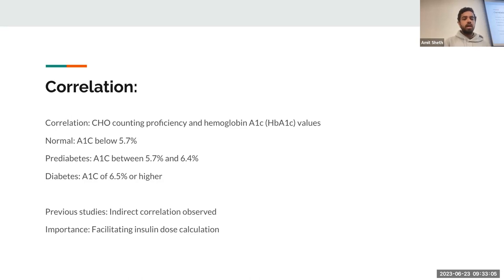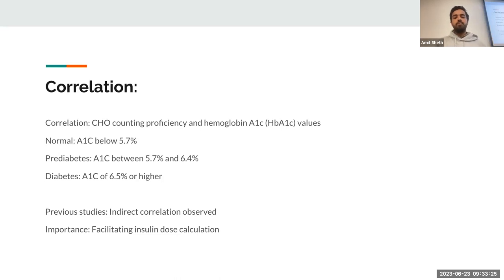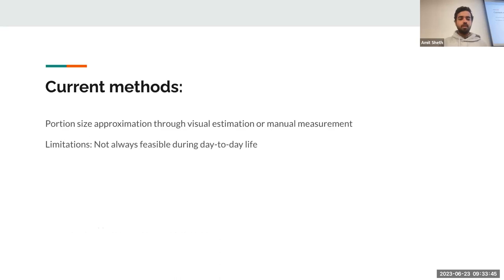There is a strong correlation between carbohydrate counting and hemoglobin A1C values, which determines if you have diabetes or not. A1C values below 5.7 is normal; A1C between 5.7 and 6.4 is pre-diabetic; and A1C values higher than 6.5 indicates diabetes. Previous studies have shown an indirect correlation observed between carbohydrate intake and insulin dosage. The importance is to facilitate insulin doses accordingly to carbohydrate intake. Currently, proportion size approximation is done through visual estimation or manual measurement — you have a meal and determine how much carbohydrate you're taking.